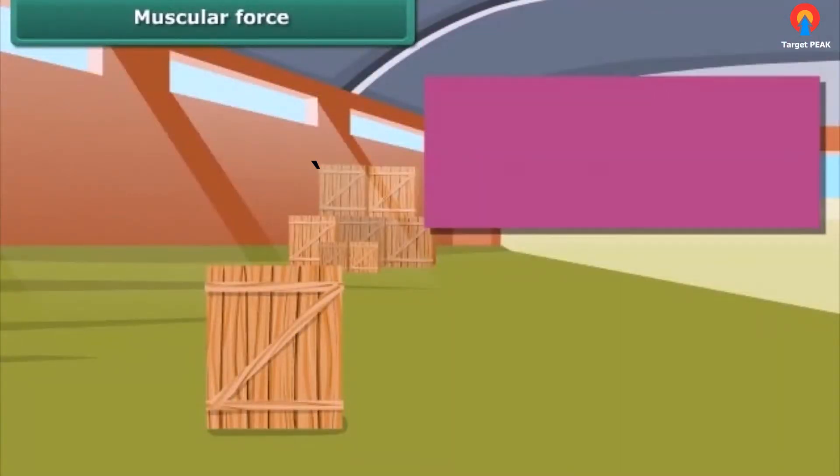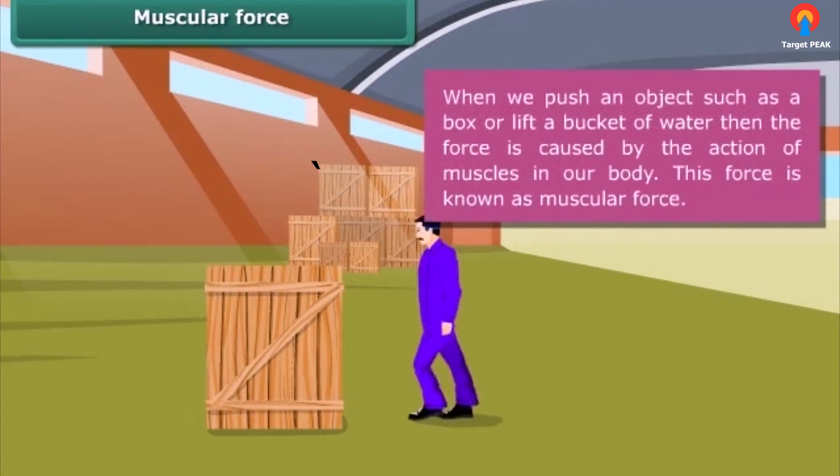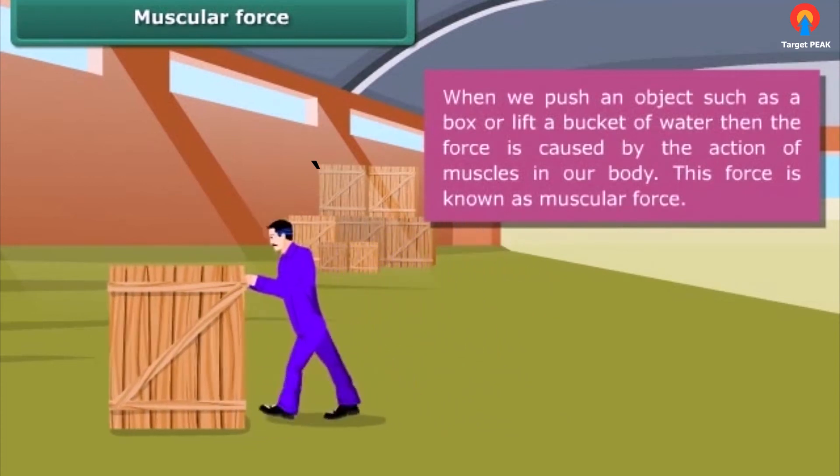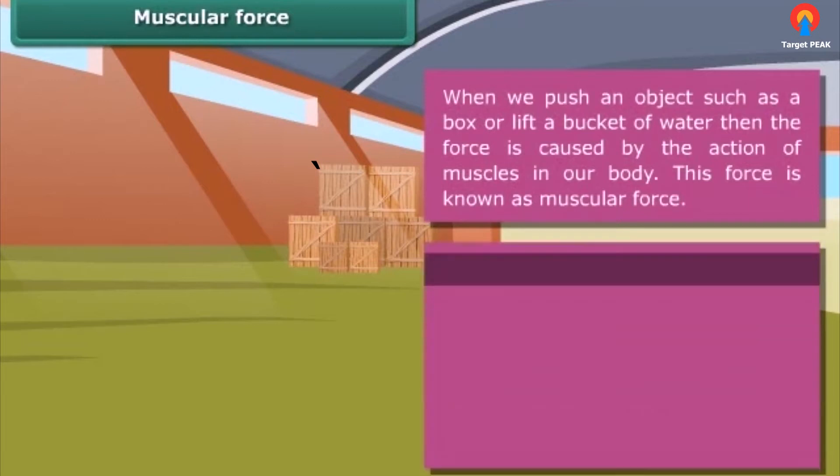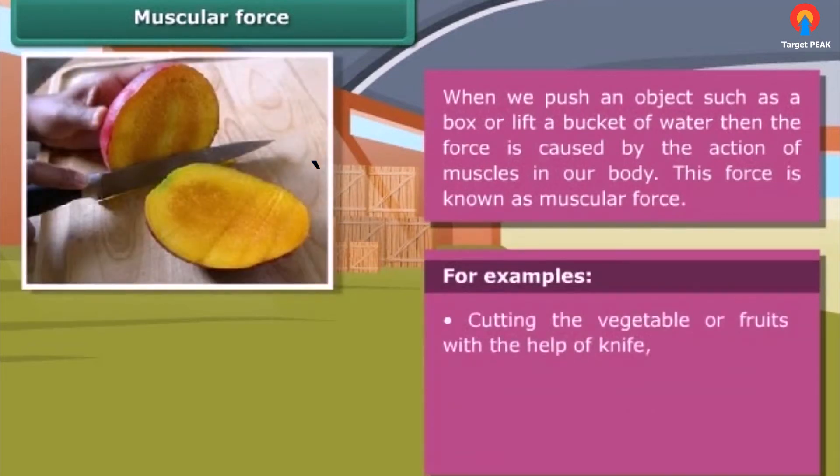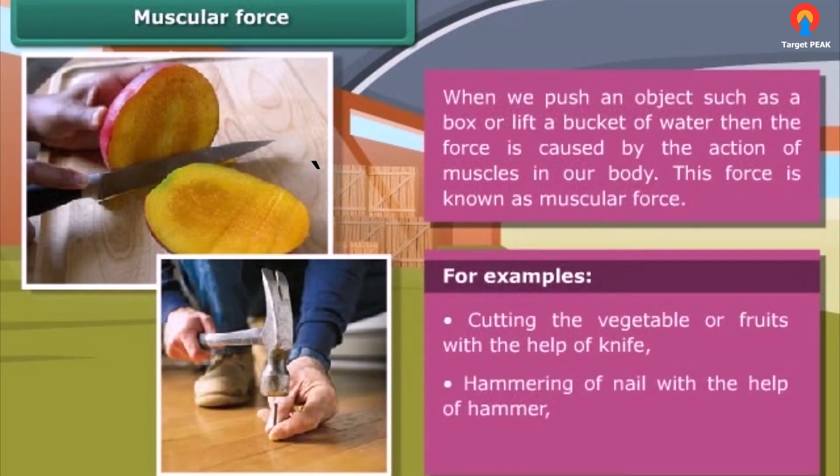When we push an object such as a box or lift a bucket of water, then the force is caused by the action of muscles in our body. This force is known as muscular force. Note that muscular force is always applied either directly through touch or indirectly with the help of a stick or piece of rope. For examples: cutting the vegetables or fruits with the help of a knife, hammering of nail with the help of a hammer, pulling a cart by horse.